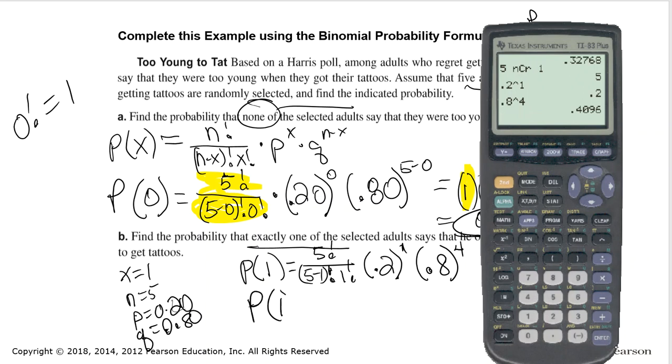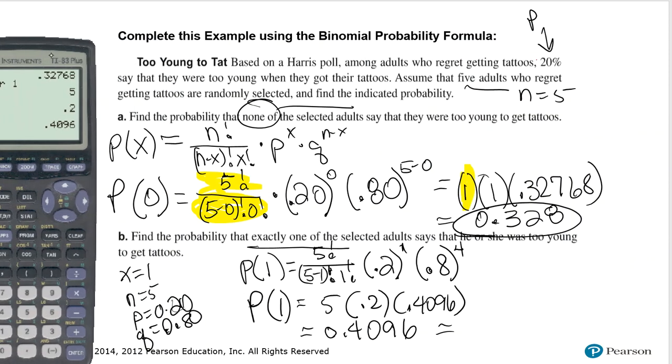the probability of exactly one adult out of five saying they were too young to get tattoos is going to be nCr, which is 5 times 0.2 times 0.4096. When you multiply those together, because 0.2 times 5 is going to be 1, you're going to end up with the 0.4096, which if you round to three significant digits, gives us a probability of 0.410. This problem is continued in the next video.